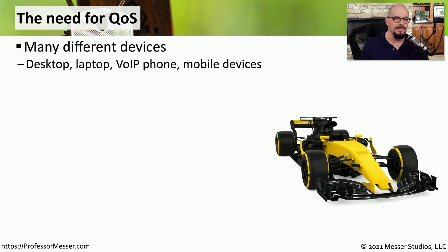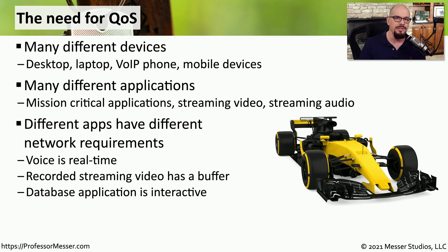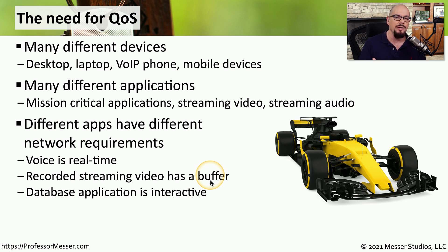There are many different kinds of devices on our networks these days — laptops and desktops, mobile devices and tablets, and voice over IP systems — all running different applications. Some of these are real-time applications, some are streaming audio or video, and some are web-based applications, each with different requirements for access. Some require faster response times, others require larger amounts of bandwidth. For example, a voice conversation is a real-time communication that needs to happen immediately, streaming video has a buffer allowing more leeway, and a database application may be interactive, expecting output in a very short period of time.